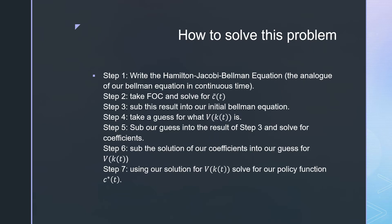We do this by following seven steps. Step one is writing out the Hamilton-Jacobi-Bellman equation, the analog of the Bellman equation in continuous time. Step two is taking our first order conditions and solving for c̃(t), an intermediate state.